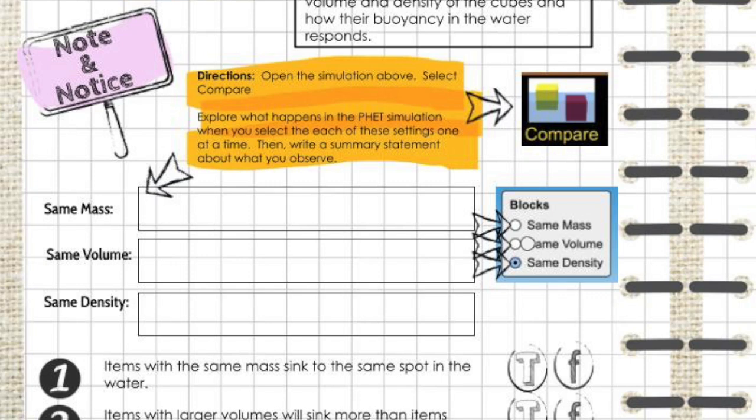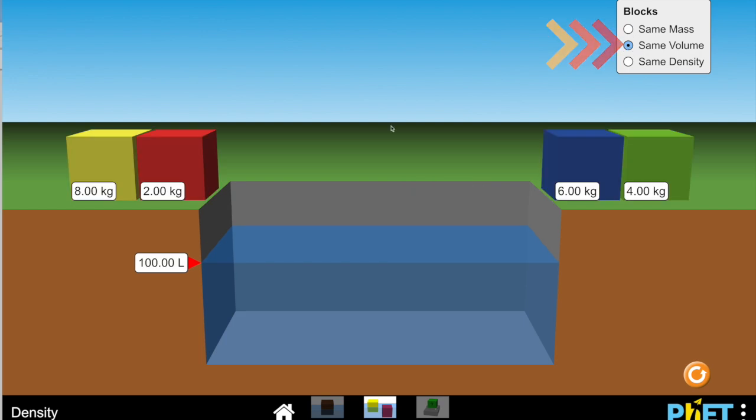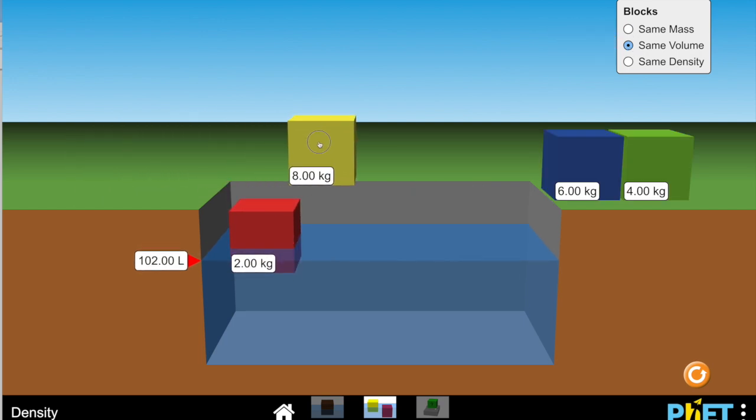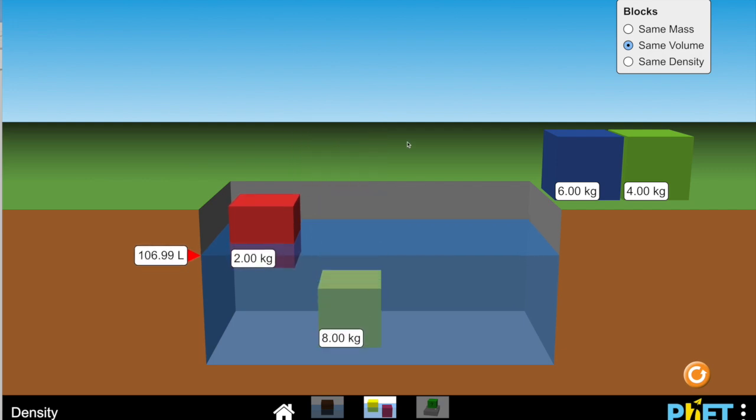Next, we're going to go back into the simulator and explore the volume of shapes. Click here to change the simulator to show items of the same volume. You can see that each of these items has the same volume and yet their mass is different. Then explore.